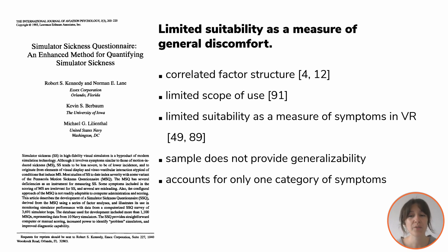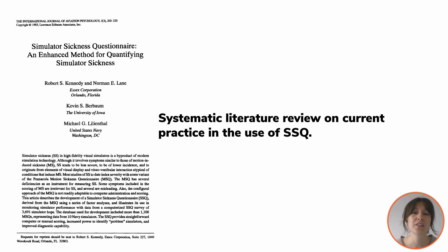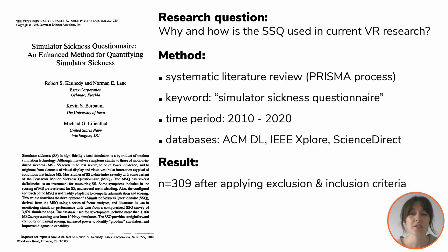To get an overview of why and how the questionnaire is used in today's research, we conducted a systematic literature review on the current practice in the use of the SSQ. In particular, we were interested in the authors' rationales for using the questionnaire. We followed the PRISMA process to identify relevant papers and found 309 papers published in the last 11 years after applying exclusion and inclusion criteria.